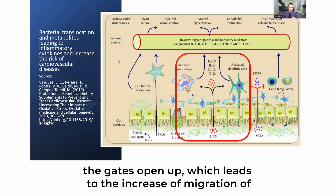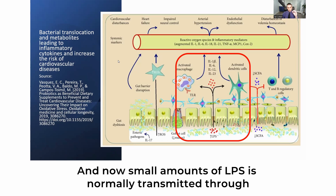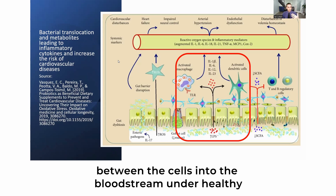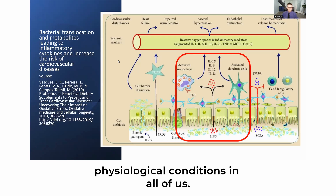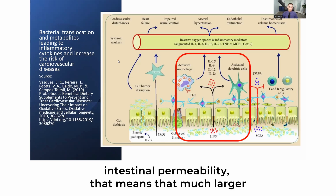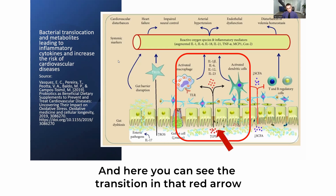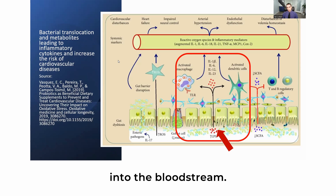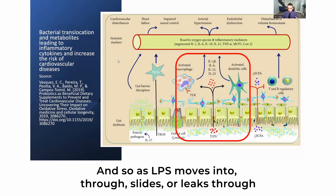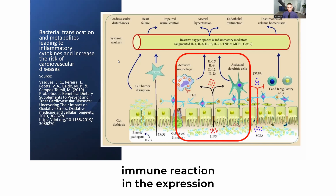This leads to increased migration of lipopolysaccharides (LPS) into the bloodstream. Small amounts of LPS are normally transmitted between cells into the bloodstream under healthy physiological conditions. But when a patient has increased intestinal permeability, much larger amounts of LPS transition — as shown in the red arrow — into the bloodstream.